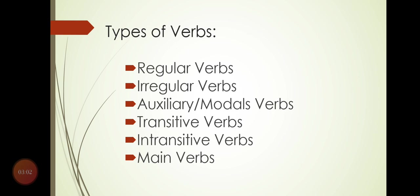The types of verbs are: regular verbs, irregular verbs, auxiliary verbs — also known as modals — transitive verbs, intransitive verbs, and main verbs. In this lecture we will only discuss regular verbs and irregular verbs. Auxiliary verbs and modals will be discussed separately in later lectures.